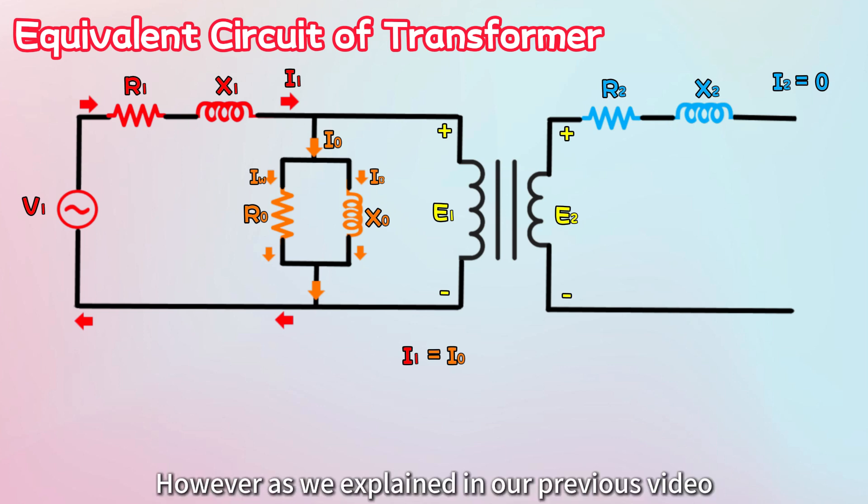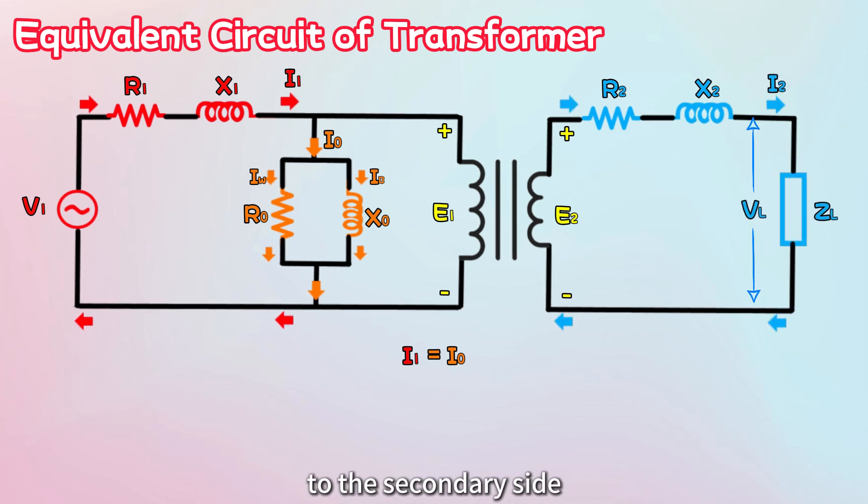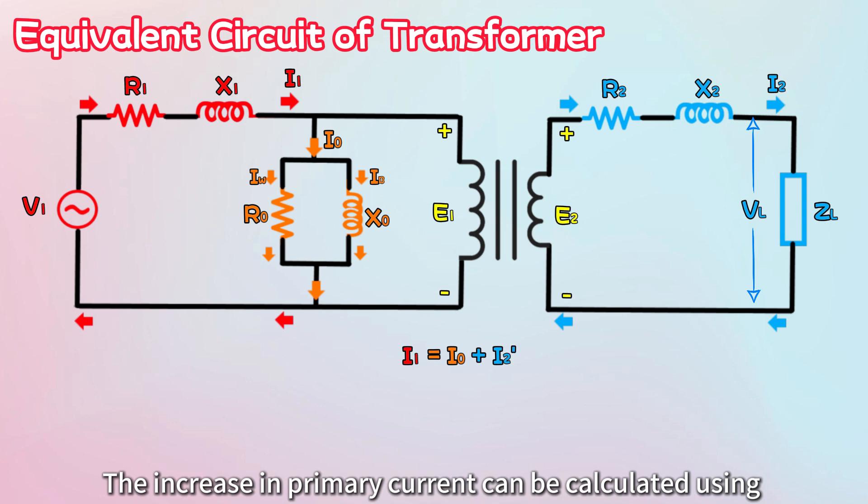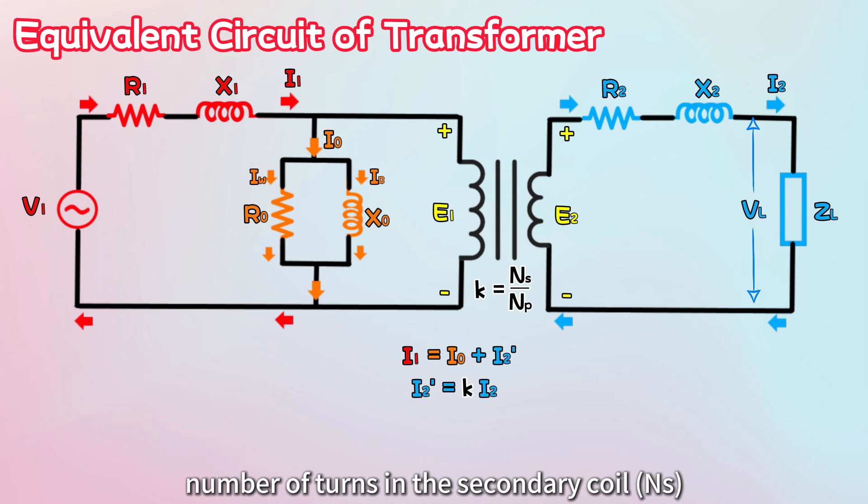However, as we explained in our previous video, the primary current is proportional to the secondary current. This means that if a load is connected to the secondary side and secondary current flows, the primary current will increase proportionally. The increase in primary current can be calculated using reflected secondary current I2', given by the formula K times I2. Here, K is the ratio of the number of turns in the secondary coil to the number of turns in the primary coil.